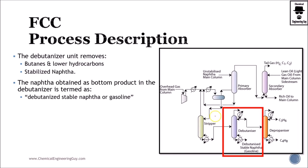The problem with nafta is that we still have some off gases, especially butane and propane. So in the debutanizer, we're going to be removing C3 and C4. Debutanized stable nafta, typically named gasoline, is now ready to be added to the blending pool. So this is our FCC gasoline, the so-called FCC gasoline.